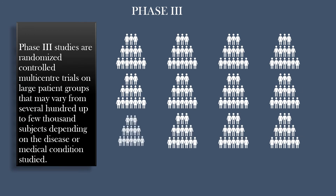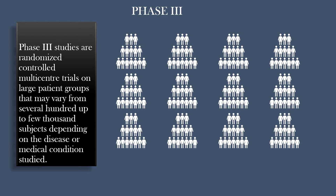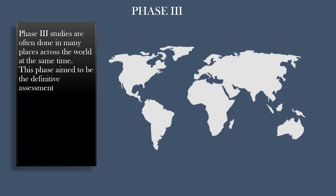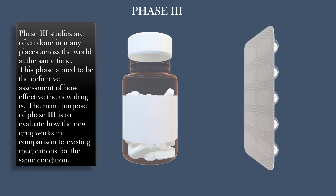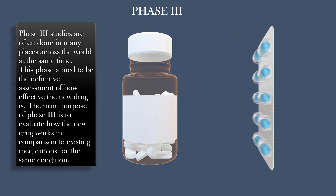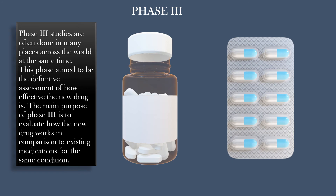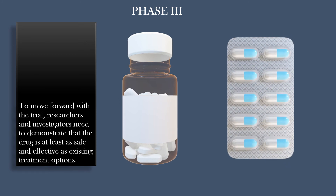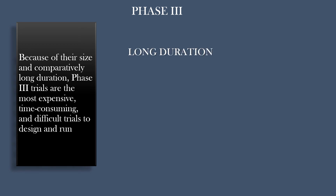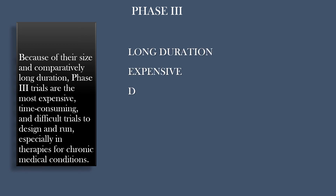Phase 3 studies are randomized controlled multi-center trials on large patient groups that may vary from several hundred up to a few thousand subjects, depending on the disease or medical condition studied. Phase 3 studies are often done in many places across the world at the same time. This phase aims to be the definitive assessment of how effective the new drug is. The main purpose of Phase 3 is to evaluate how the new drug works in comparison to existing medications for the same condition. Researchers and investigators need to demonstrate that the drug is at least as safe and effective as existing treatment options. Because of their size and comparatively long duration, Phase 3 trials are the most expensive, time-consuming, and difficult trials to design and run, especially in therapies for chronic medical conditions.